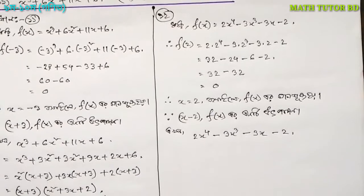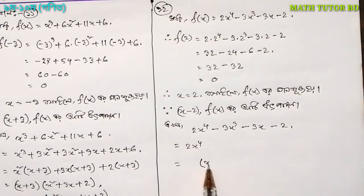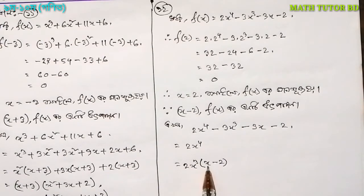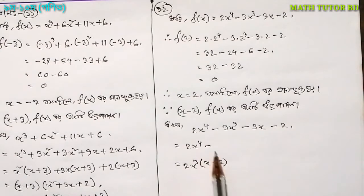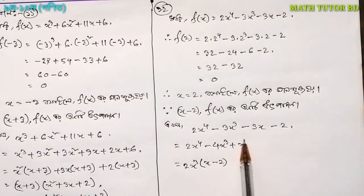Let's see what we need to do. 2x to the power 4. x minus 2. x minus 2 to the power 4. 2x to the power 4. From minus minus minus 2 minus 4 — 4x³. Now we need to do 3x³. I will select the x cube collectively, then the x cut.